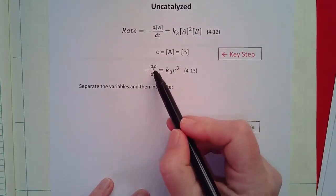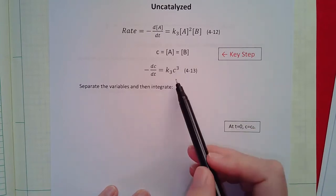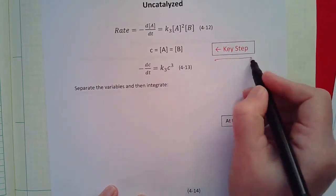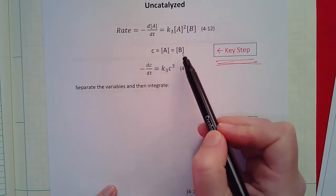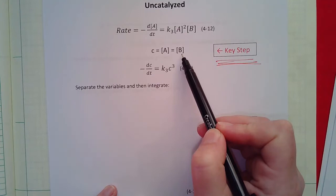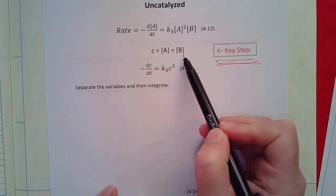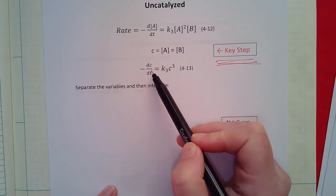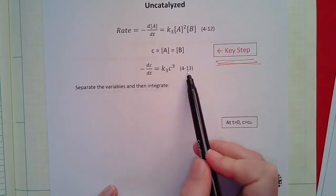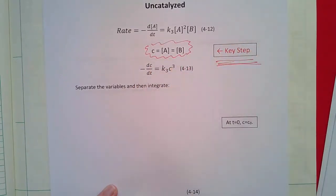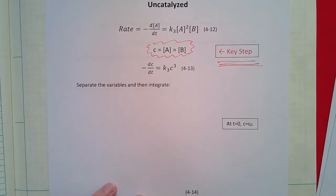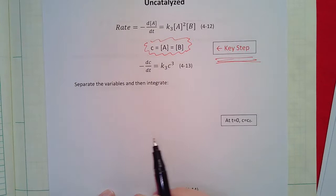This is the key step: we set [A] = [B] and we can do everything in terms of a single variable c, the concentration of either functional group. Then we get: -dc/dt = k₃·c³. We can solve that equation. If you don't remember that the concentration of acid equals the concentration of alcohol at t=0 and at all times during the reaction, you can't set them equal and you can't solve this equation — so this step is super important.